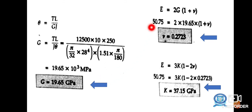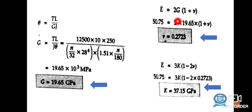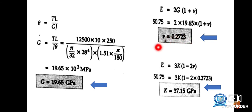Next, we find the Poisson's ratio. Using the relationship between Young's modulus and shear modulus: E = 2G(1 + μ). Substituting E = 50.75 GPa and G = 19.65 GPa into the formula, we solve for μ and obtain the Poisson's ratio μ = 0.2723.